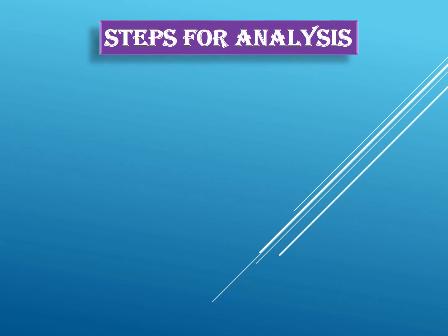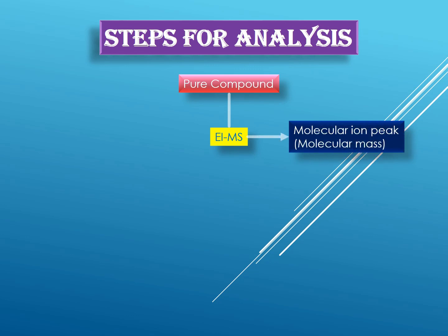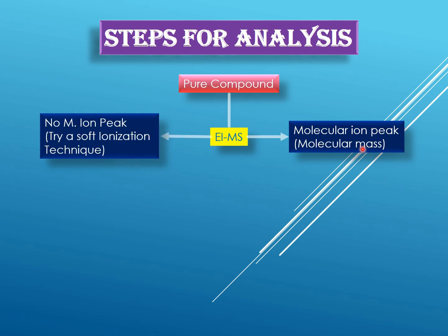Now let's see the steps for structure elucidation of an unknown molecule. You must start with a pure compound — purity is essential because impurities may give additional peaks in the spectrum leading to wrong analysis or wrong results. The first step is to obtain the electron impact mass spectrometry (EIMS) spectrum, which is a hard ionization technique and will give you the molecular ion peak from which you can determine the molecular mass of the compound.